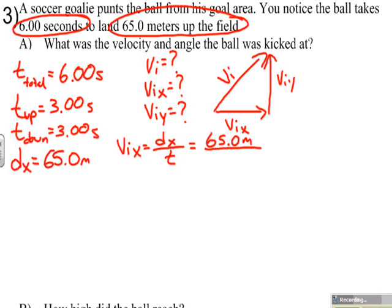The distance it traveled was 65 meters, and it did that in 6.00 seconds. So, our initial velocity in the x direction works out to be 10.8 meters per second.